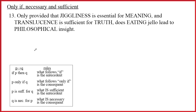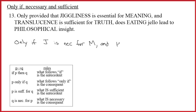Sentence thirteen is the last sentence. Let's rewrite it. 'Only provided that' is just a fancy 'only if.' Only if J is essential — 'essential' is a synonym for necessary — so J is necessary for M. And translucence is sufficient for truth: T is sufficient for R. Comma: 'How does eating jello lead to philosophical insight?' — so E leads to P. The rewritten form: only if J is necessary for M and T is sufficient for R, E leads to P.